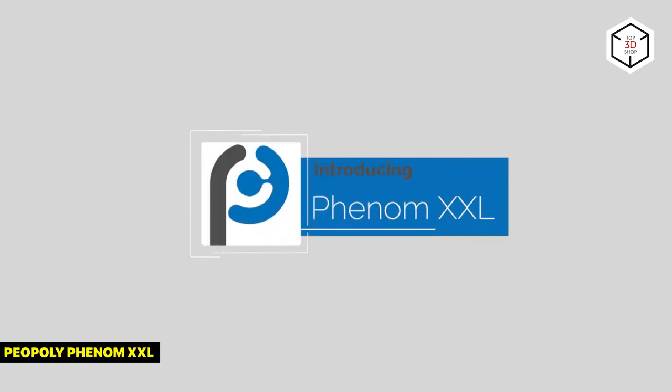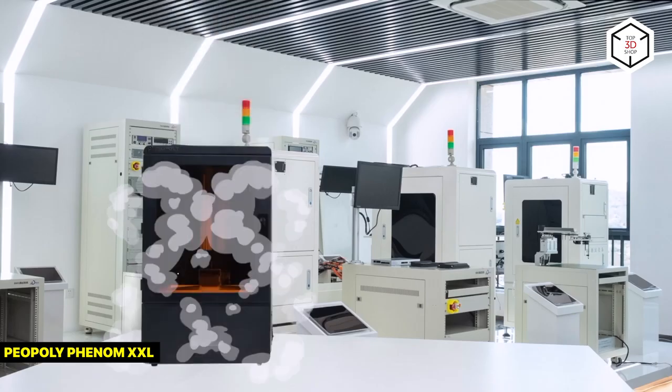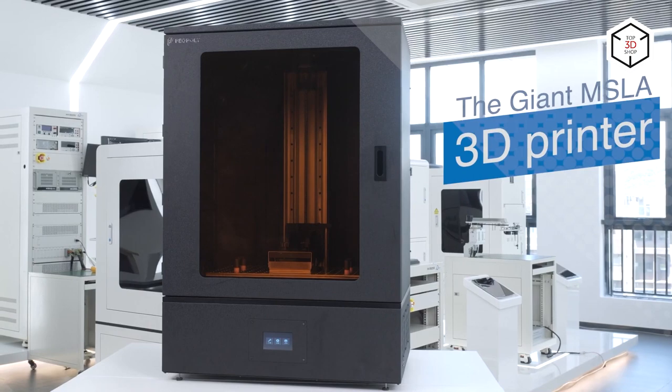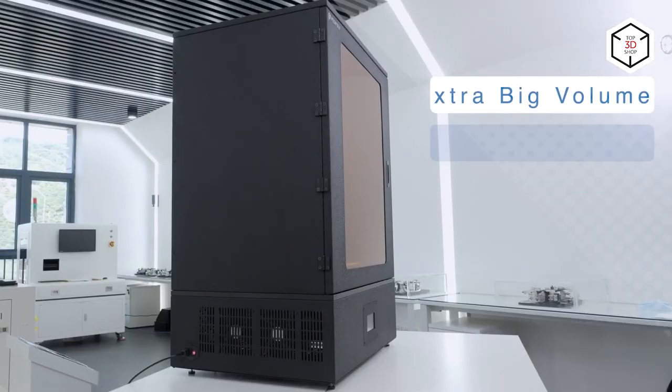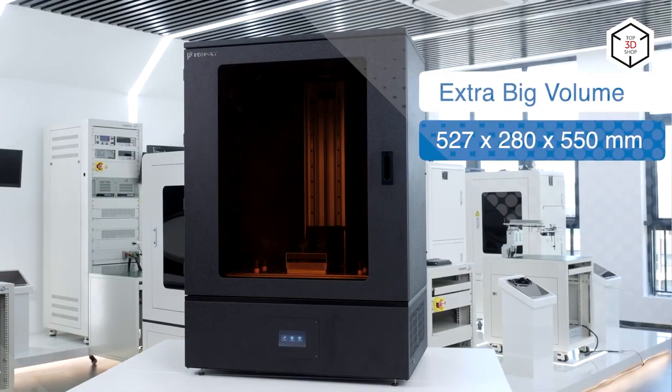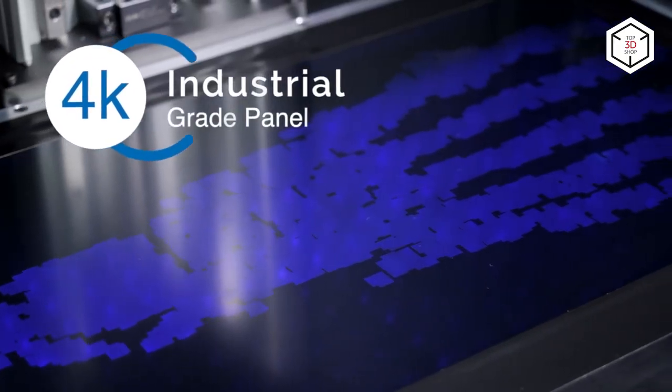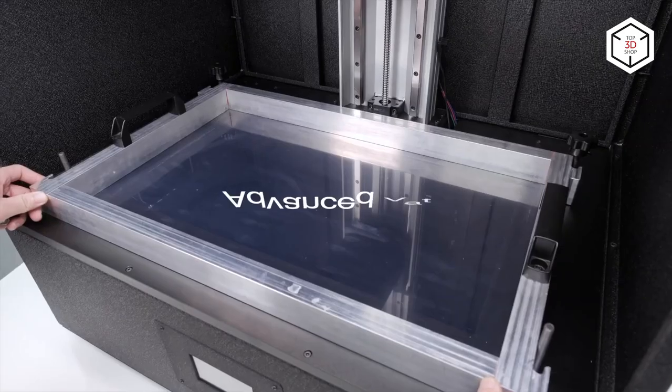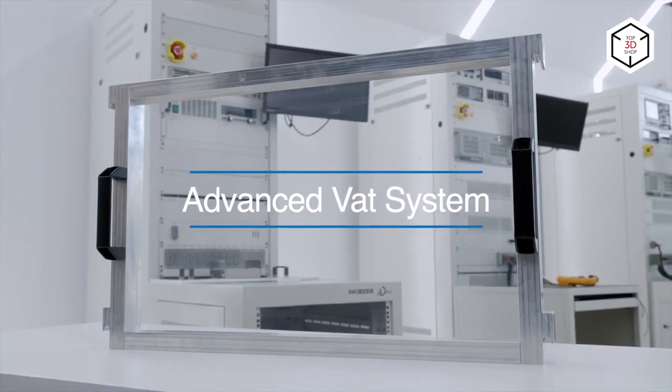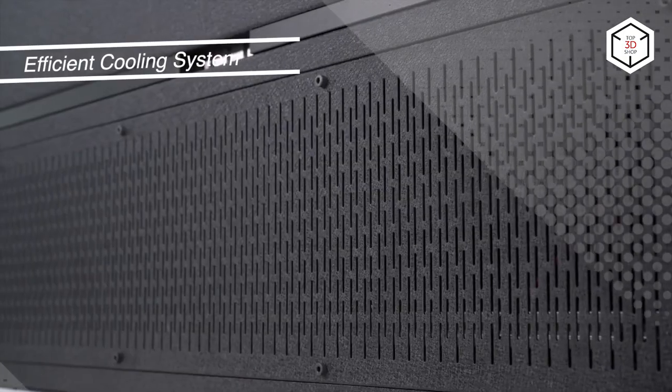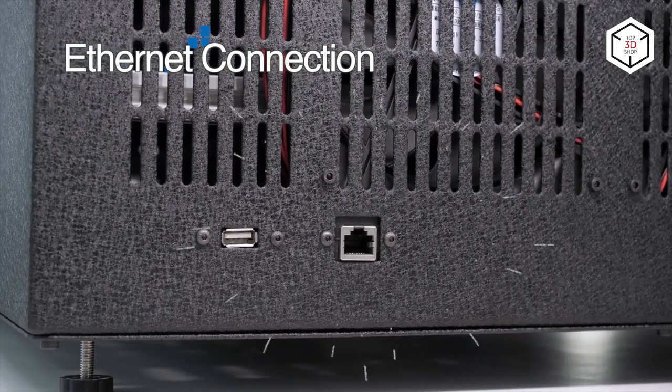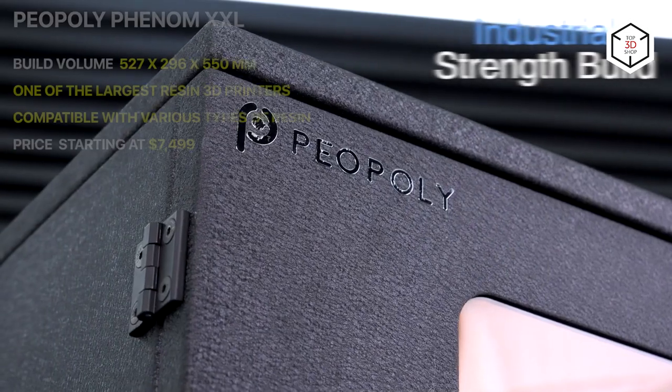Carrying on with commercial printers, we proceed to the Phrozen Phenom XXL, a large LCD 3D printer featuring a build volume of about 527 by 296 by 550 millimeters. Yet its XY resolution is a huge step down from the Sonic Mega 8K. The printer's 4K LCD mask gives a resolution of only 137 microns. Phenom XXL supports various resins, and great news for all the printer owners is that fast Phrozen DEFT and NEO resins for large format MSLA printers work just fine with the XXL model.